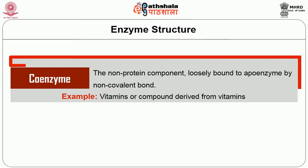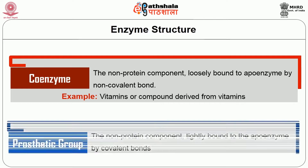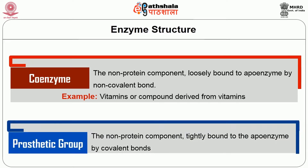Notable examples of coenzymes are vitamins or compounds derived from vitamins, such as FAD (Flavin adenine dinucleotide), FMN (Flavin mononucleotide), and NAD (Nucleotide adenine dinucleotide). The prosthetic group, the non-protein component, is generally tightly bound to the apoenzyme by covalent bonds.